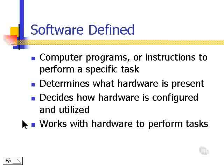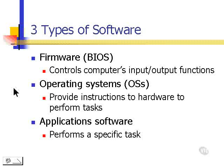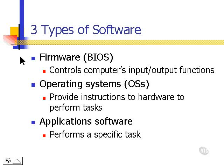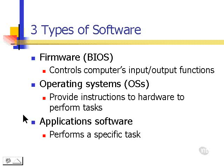Now, there are three different types of software. There's firmware, of which BIOS is an example, and typically this is hard-coded software and not easily changed. There's operating system software, which provides instructions to hardware to perform tasks, and there's application software, which actually performs a specific task.